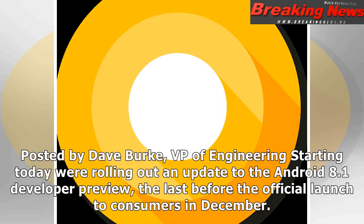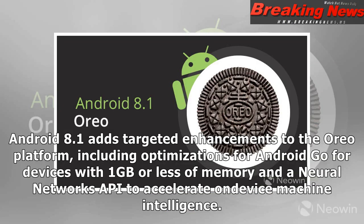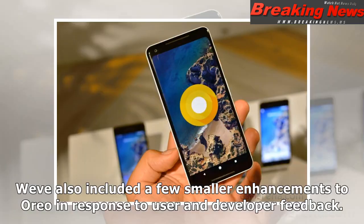Posted by Dave Burke, VP of Engineering. Starting today we're rolling out an update to the Android 8.1 developer preview, the last before the official launch to consumers in December. Android 8.1 adds targeted enhancements to the Oreo platform, including optimizations for Android Go for devices with 1GB or less of memory, and a Neural Networks API to accelerate on-device machine intelligence. We've also included a few smaller enhancements to Oreo in response to user and developer feedback.